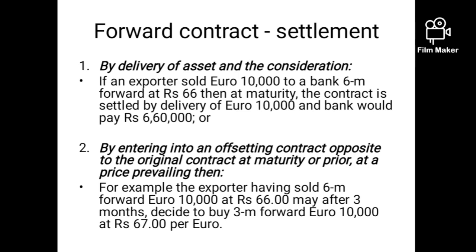So number one settlement is by actually fulfilling the obligation — if I am seller, I sell; if the bank is buyer, it buys. Number two, the settlement of a forward contract can also be done by entering into an offsetting contract. The meaning of offsetting is: initially I was the seller — I promised the bank I would sell 10,000 euros at 66 rupees, so I am short forward. But suppose I am no longer interested in selling. What I will do is enter into a long forward — a reverse transaction. If I was short, I go long, and I am out of the market.